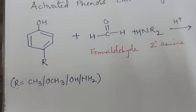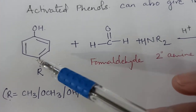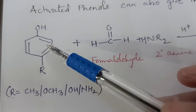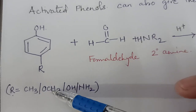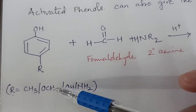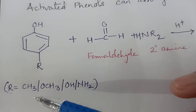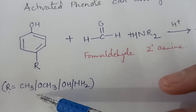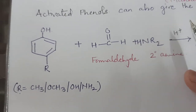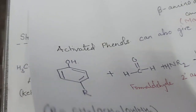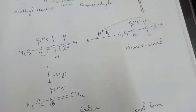These are activated phenols — phenols with ortho-para directing groups or activating groups such as methyl, methoxy, hydroxy, NH2, or halogen. Now we come to the mechanism of the reaction.